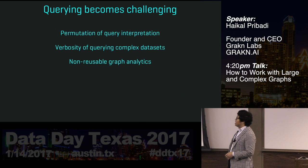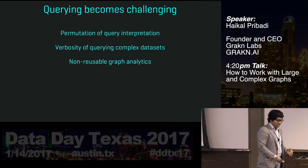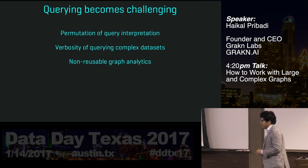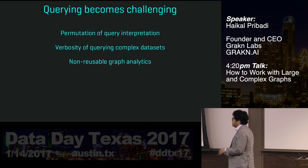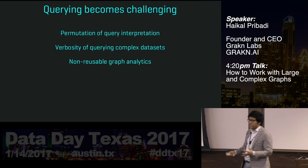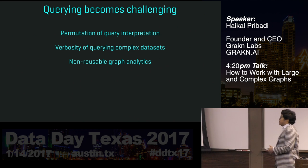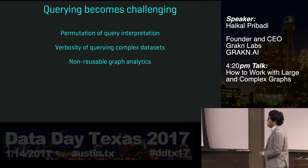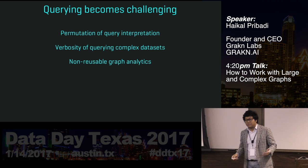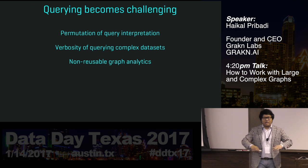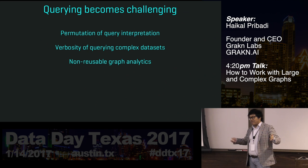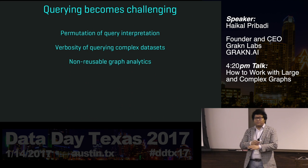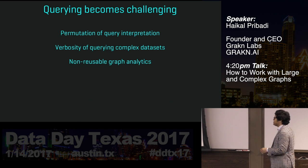What about the query? There are a lot of problems with querying complex datasets, but they all fall into three categories: the permutation of query interpretation, the verbosity of queries on complex datasets, and the reusability of graph analytics — because when you're collecting a lot of information, it's highly likely that you'll want to perform some form of distributed analytics on top of it.